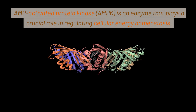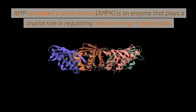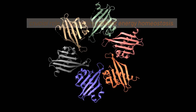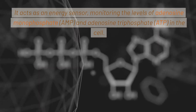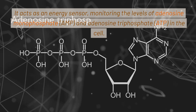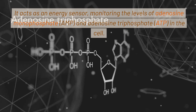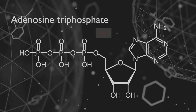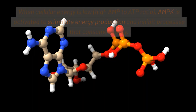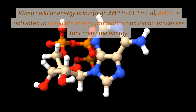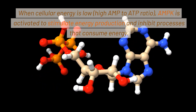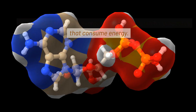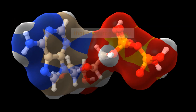AMP-activated protein kinase, AMPK, is an enzyme that plays a crucial role in regulating cellular energy homeostasis. It acts as an energy sensor, monitoring the levels of adenosine monophosphate (AMP) and adenosine triphosphate (ATP) in the cell. When cellular energy is low — a high AMP to ATP ratio — AMPK is activated to stimulate energy production and inhibit processes that consume energy.